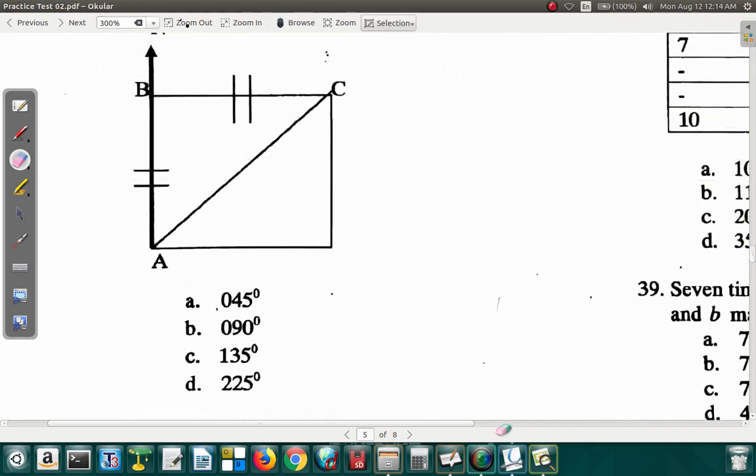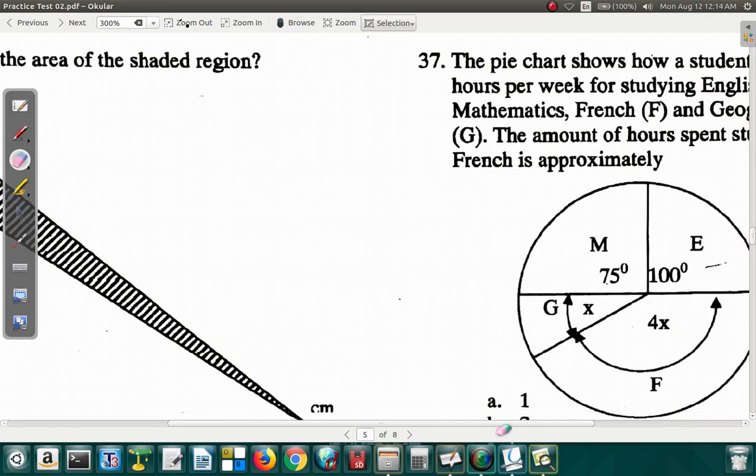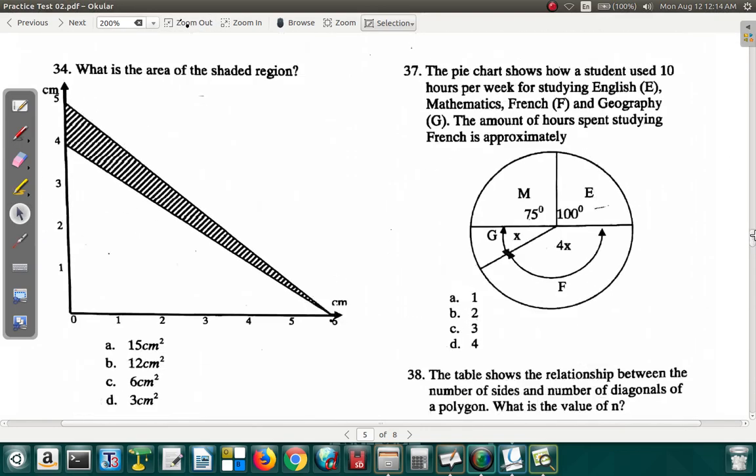Now let's go on to the next question, question 37. I'm going to have to zoom out to see question 37 clearly. The pie chart shows how a student used 10 hours per week for studying English (E), Mathematics (M), French (F), and German (G). The amount of hours spent studying French is approximately...